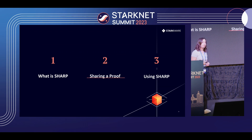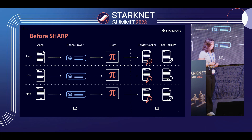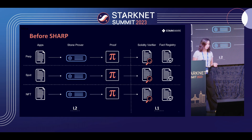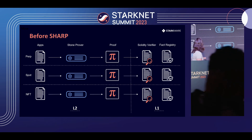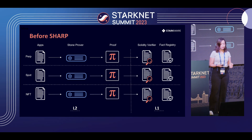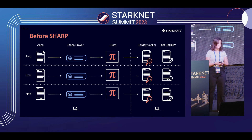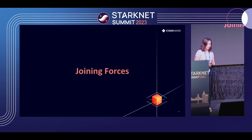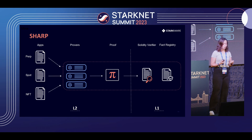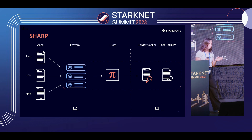Let's talk a bit about how we share the proof. Before Sharp, we did have the Stone Prover operating on-chain, but each application used its own prover. We had Spot systems, NFTs, and Perpetual — each of them sending their own logic to the Stone Prover to be proved and eventually verified on-chain by the Solidity Verifier separately. Then we decided to join forces, having all the different applications send their logic to a single system, which we called Sharp.